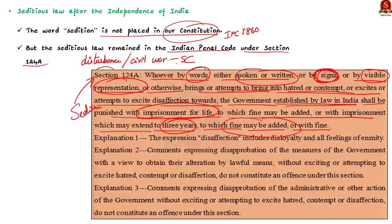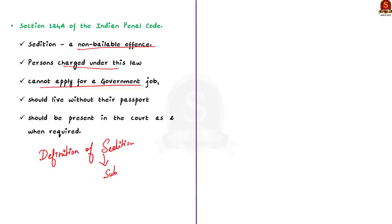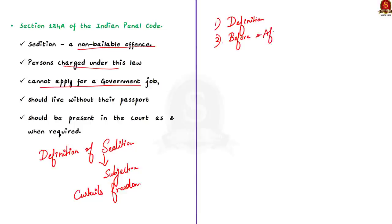Sedition is a non-bailable offence. Persons charged under this law cannot apply for a government job and must live without their passport and be present in court as and when required. The controversial provision under this section is that the seditious law is subjective in terms of defining what comes under sedition, and it curtails the freedom of citizens, especially freedom of speech and expression. To recap: sedition is all practices which disturb the peace and integrity of a country; Section 124A was added to IPC in 1870 during British rule and remained even after independence; punishment ranges from three years to life imprisonment; and the major controversy is the subjective definition of sedition.